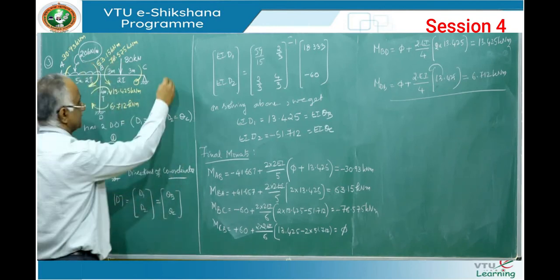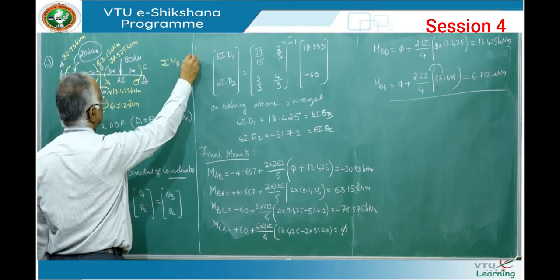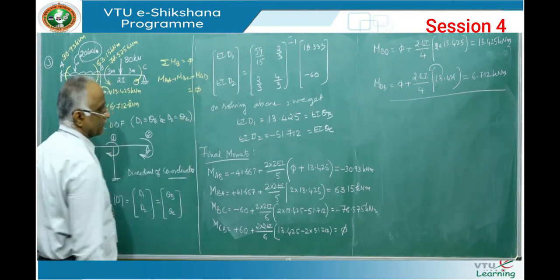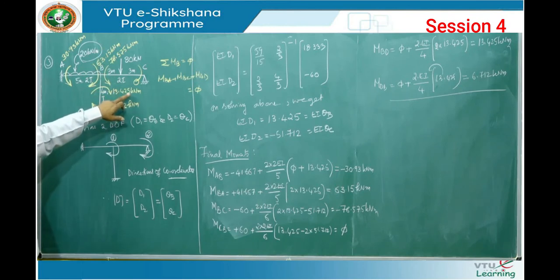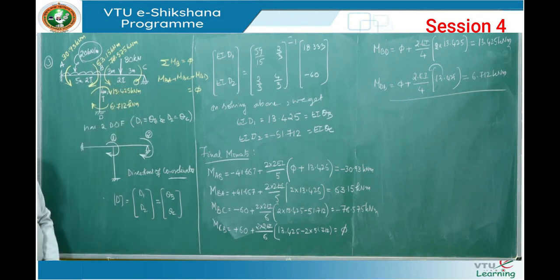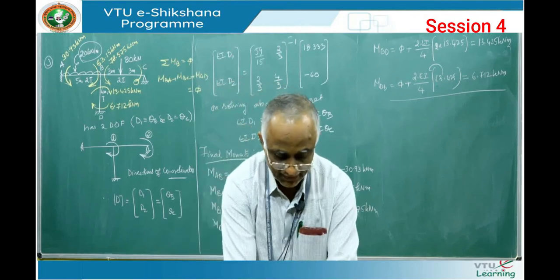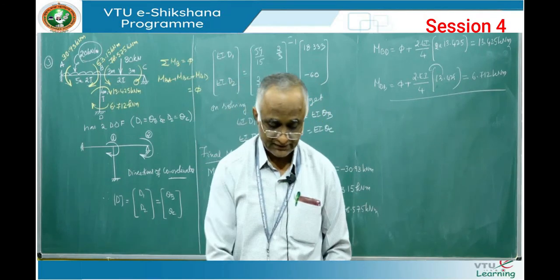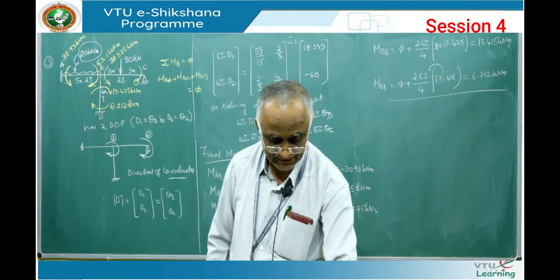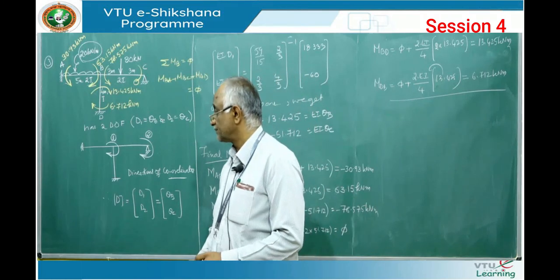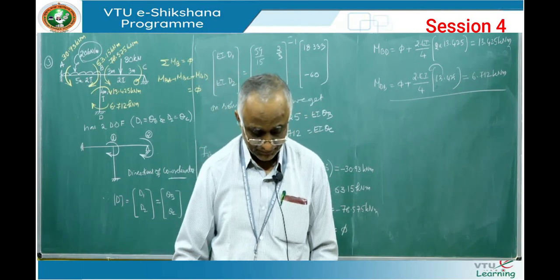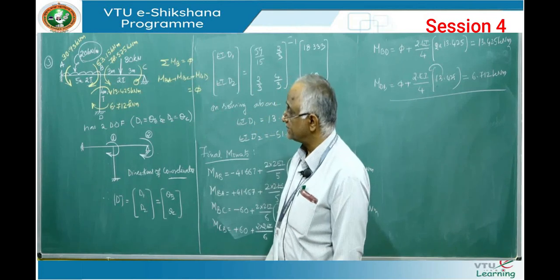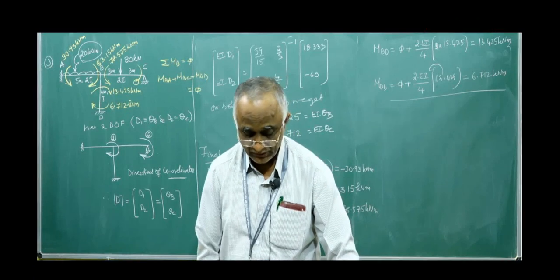To check the calculations, the net moment at B should equal 0: MBA + MBC + MBD = 63.15 minus 76.575 + 13.425 = 0. This satisfies the compatibility condition at B — the sum of all member end moments at joint B equals 0. If asked to sketch the shear force and bending moment diagram, take free body diagrams of the members as with continuous beams. This is the first problem on frames without sway, since horizontal restraints prevent lateral movement.